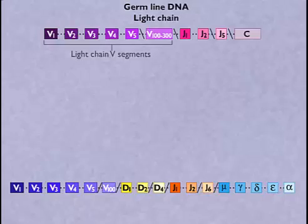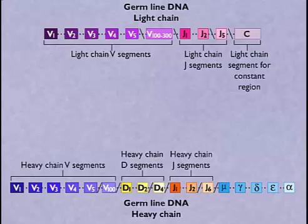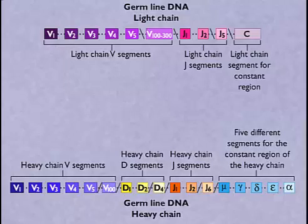Light chains are made from V and J segments in the variable region and a constant region segment, whereas heavy chains are made from V, D, and J segments in the variable region and one of five different constant region segments.